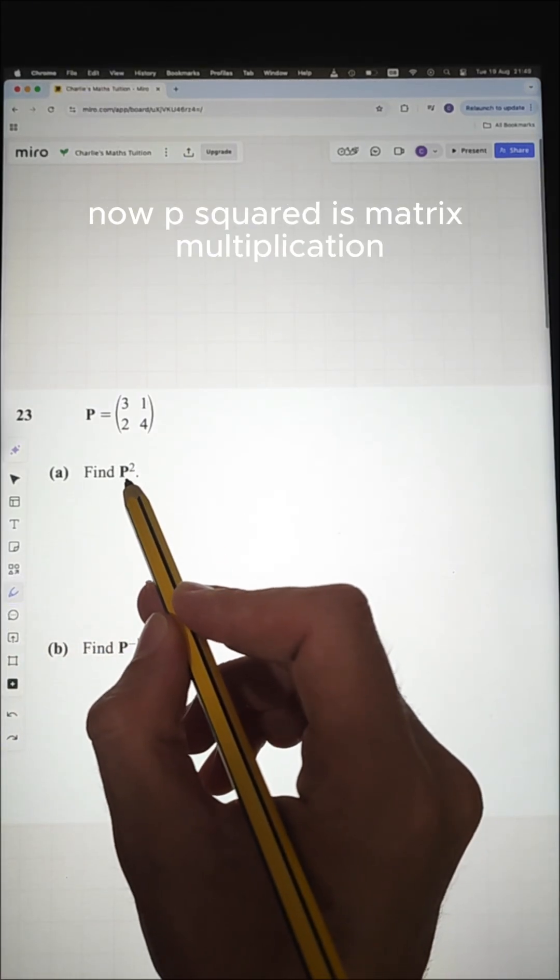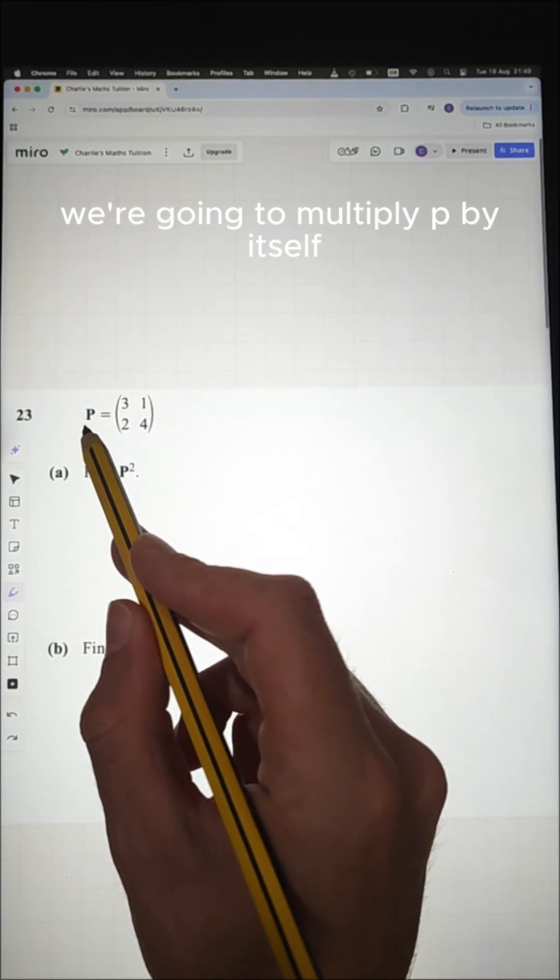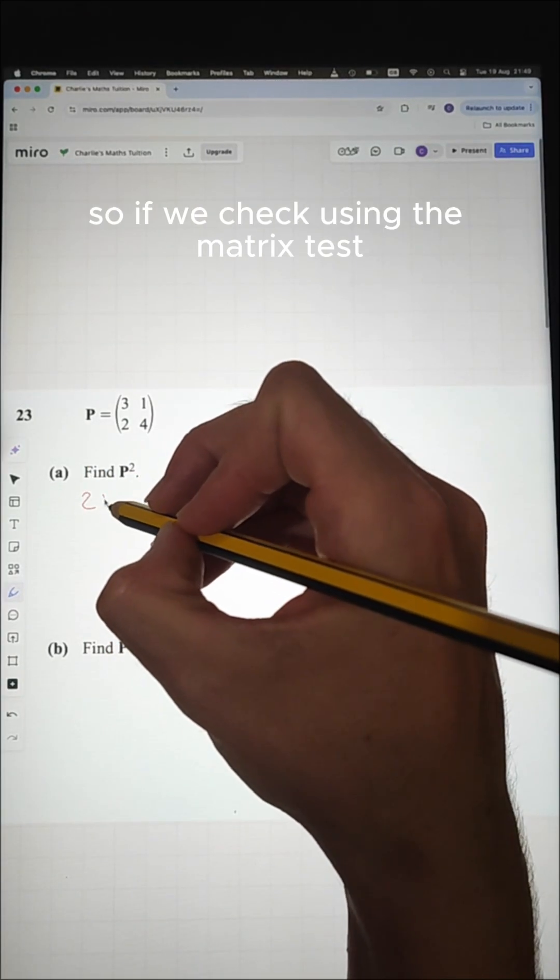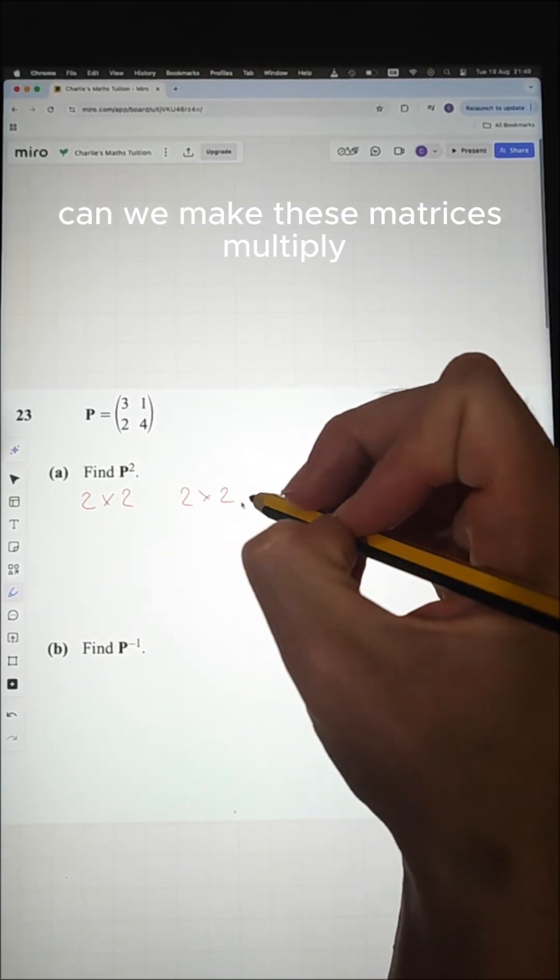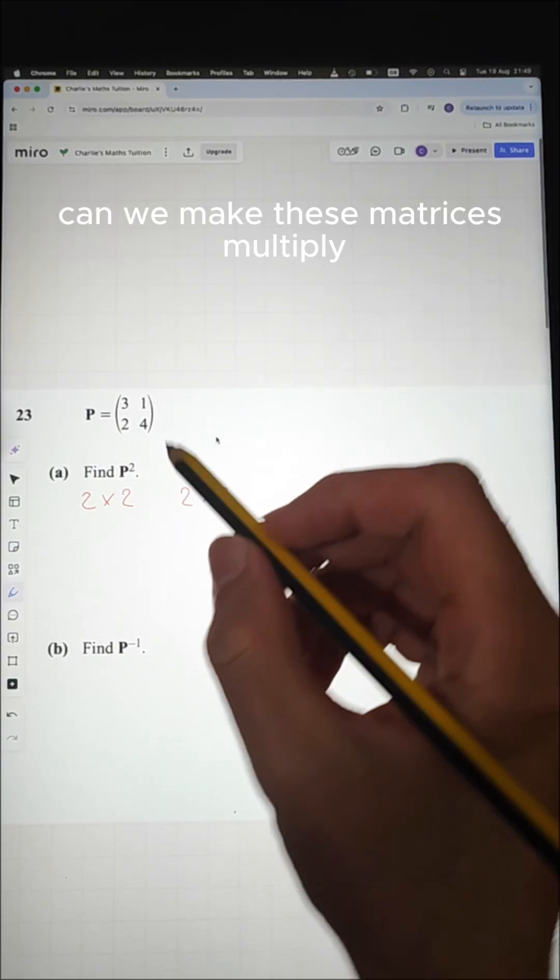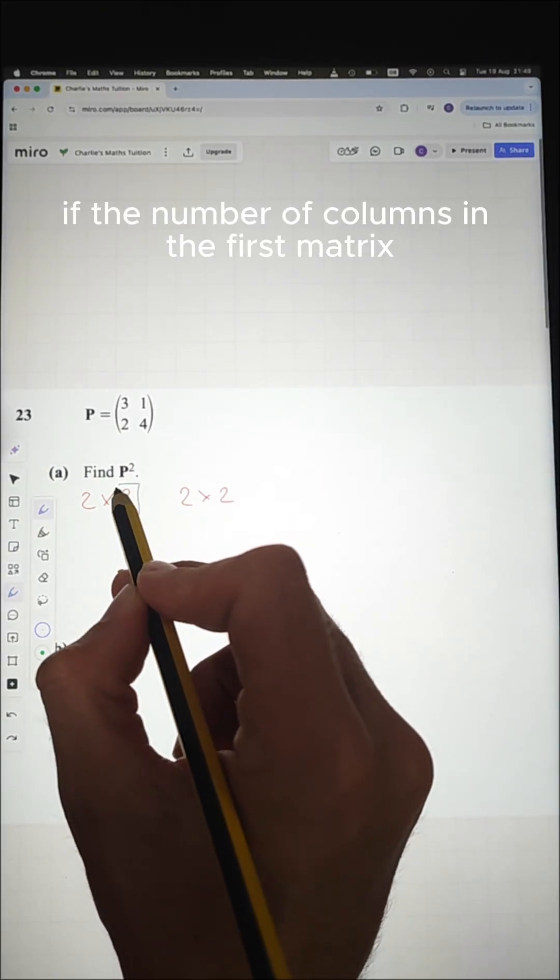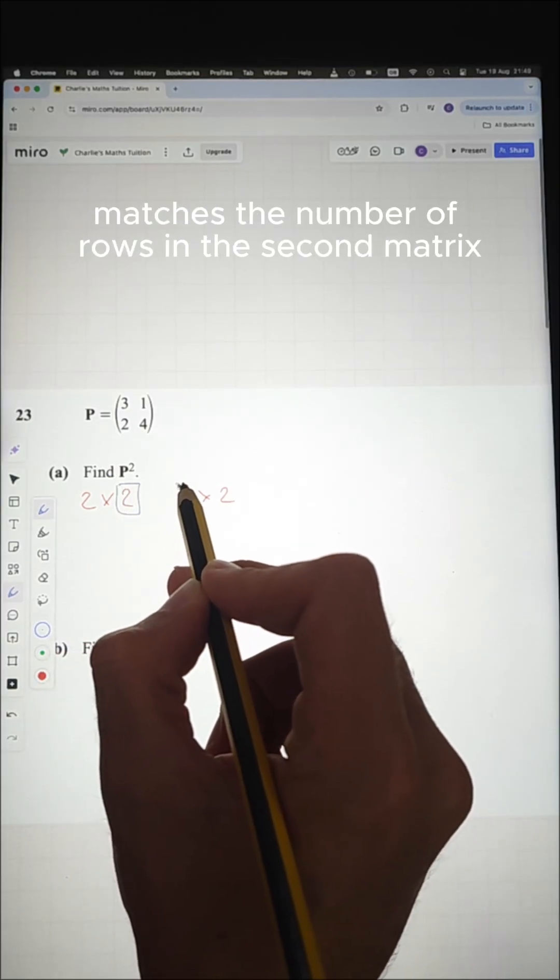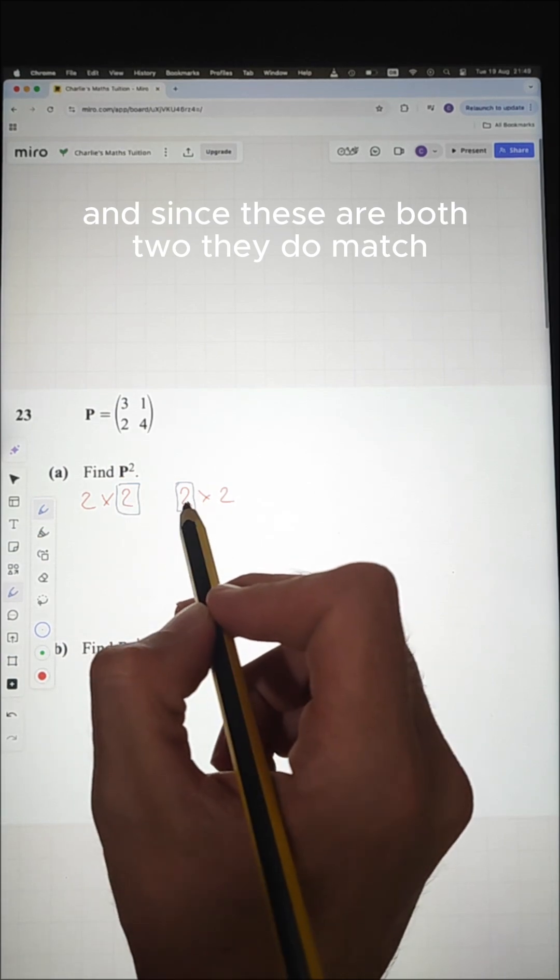Now p squared is matrix multiplication and all that means is we're going to multiply p by itself. Now these are both two by two matrices, so if we check using the matrix test, can we make these matrices multiply? Well we can if the number of columns in the first matrix matches the number of rows in the second matrix, and since these are both two, they do match.